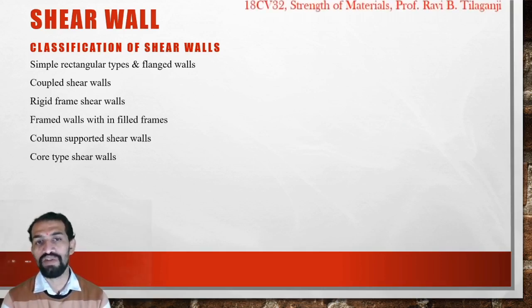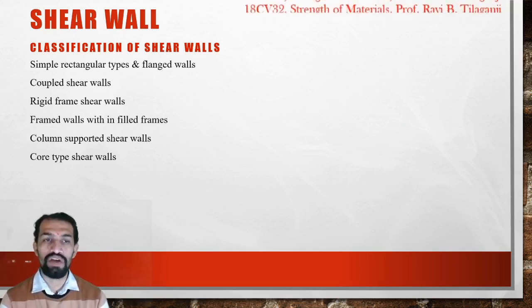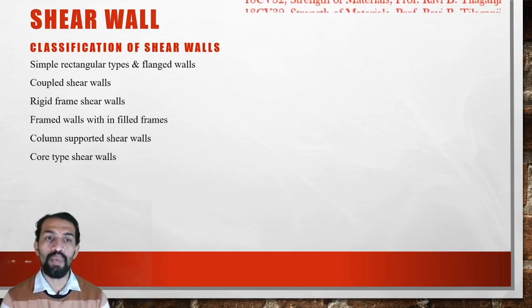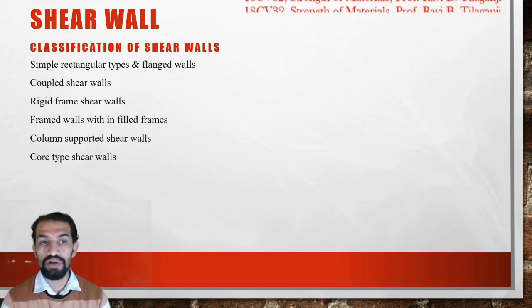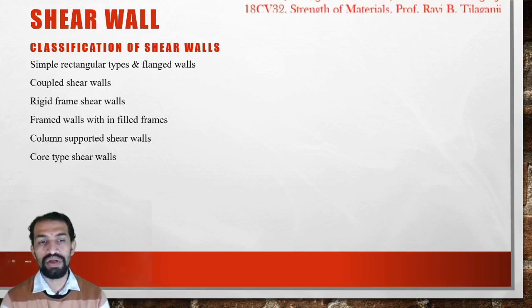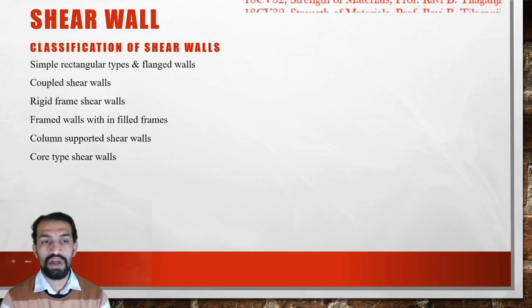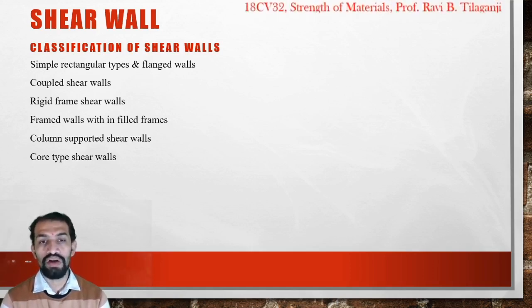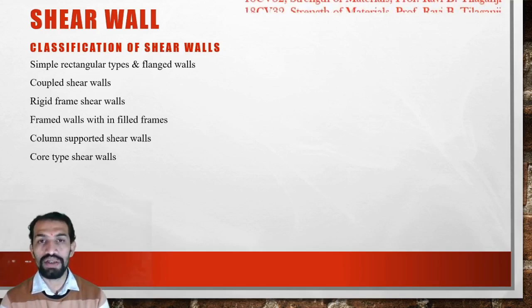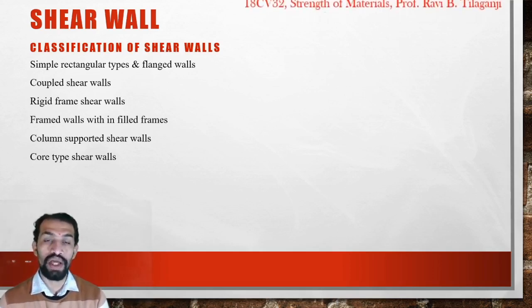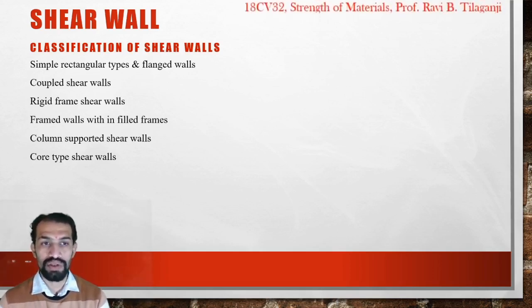We have some classifications of shear walls such as simple rectangular types and flanged walls, coupled shear walls, ring frame shear walls, framed walls with filled-in frames, column supported shear walls, and core type shear walls.